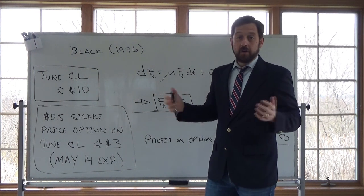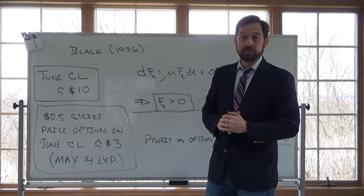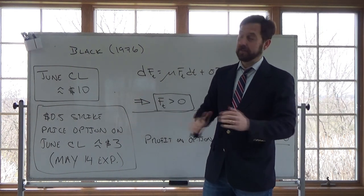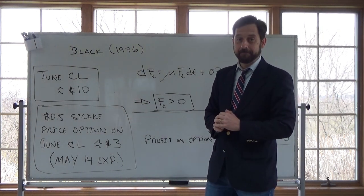So it's a really good example of what can happen to models in times of market stress. And also, again, always to pay attention to the underlying assumptions of your model. If you're using Black 76 for this option, it's not going to work out. Have a great day.